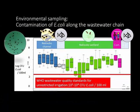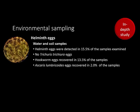This graph shows the levels of E. coli contamination along the wastewater chain. The red line indicates WHO wastewater verification limits for unrestricted irrigation. The E. coli values along the chain were all far above those limits, except at the point just before intake into the drinking water treatment plant. Contamination is only very slightly reduced by the wetland's natural treatment process before the water discharges into Lake Victoria. Of the 200 water samples examined, helminth eggs were detected in 15.5% of them. No Trichuris trichiura eggs were found, though hookworm eggs were recovered from 13.5% of the samples, and Ascaris lumbricoides eggs were found in 2% of samples.